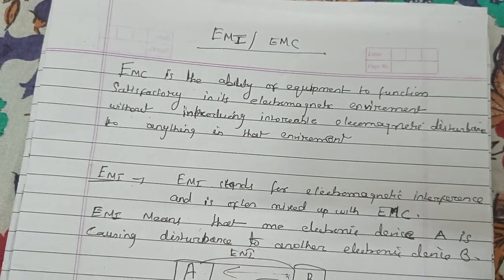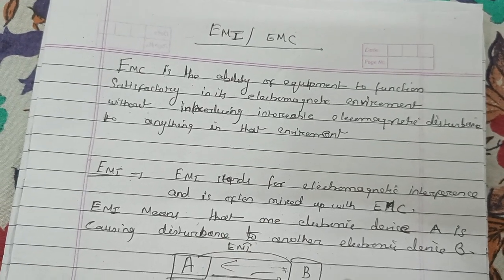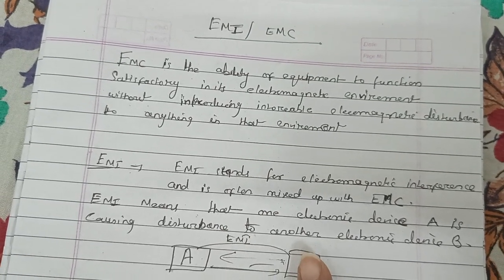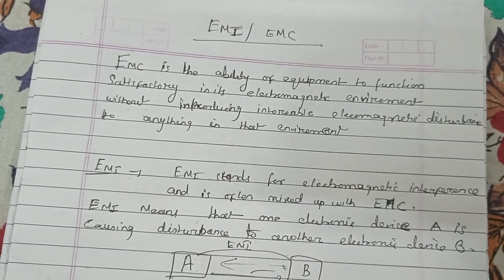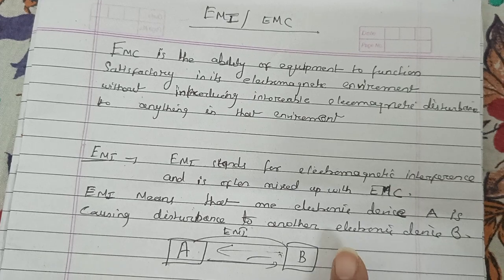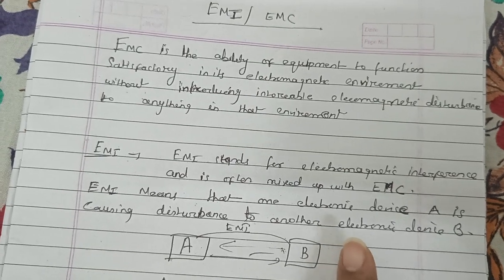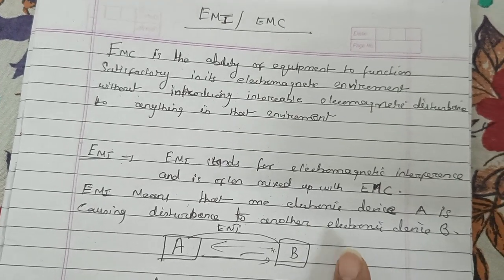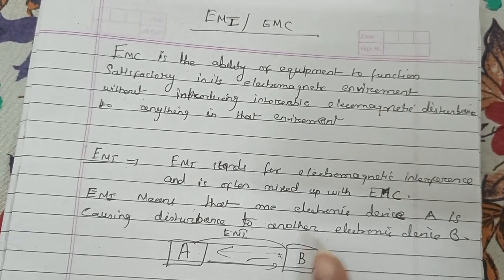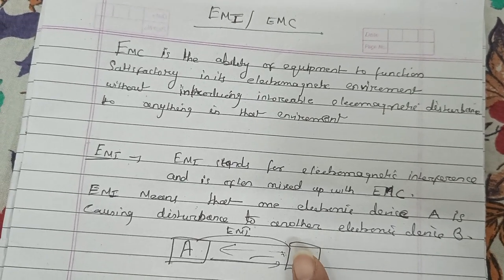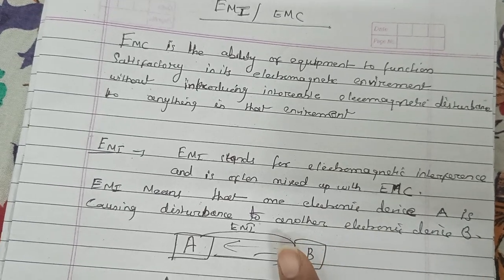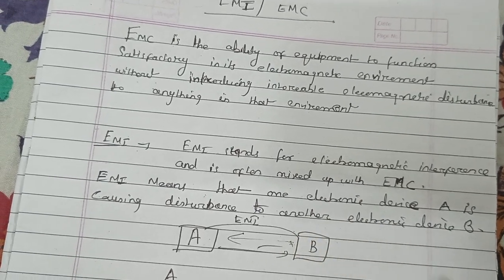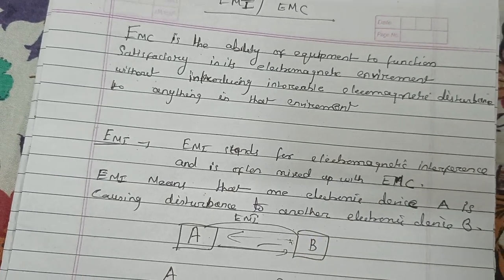My next topic is what is EMI and EMC. EMC is the ability of equipment to function satisfactorily in its electromagnetic environment without introducing interoperable electromagnetic disturbance to anything in that environment.